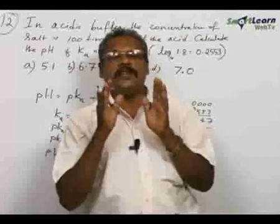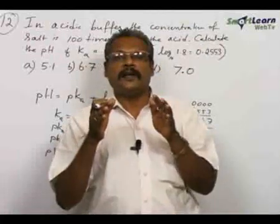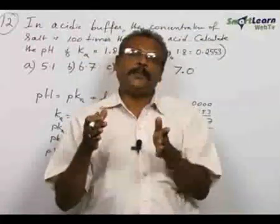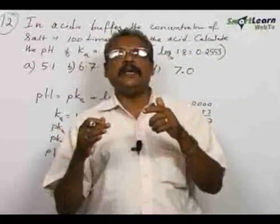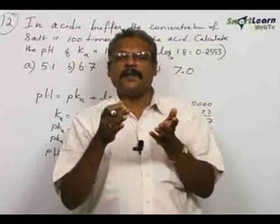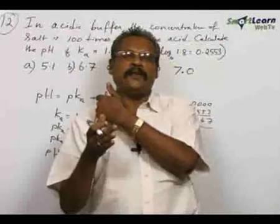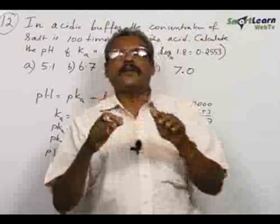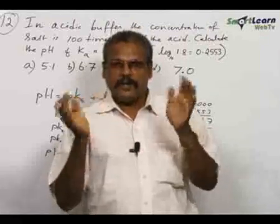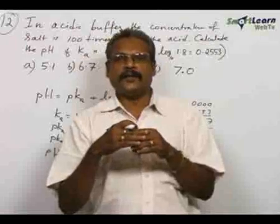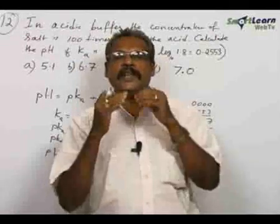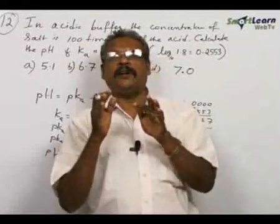By using Henderson equation we can calculate the pH. Similarly, we can calculate the pH of basic buffers also. At that time we have to go for pKb. pKb is the negative logarithm of Kb value. Just like from Ka we calculated, from the Kb value we can calculate pKb and substitute in Henderson equation. Therefore, by using Henderson equation very easily we can calculate the pH of buffers.